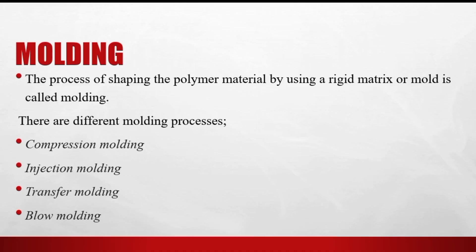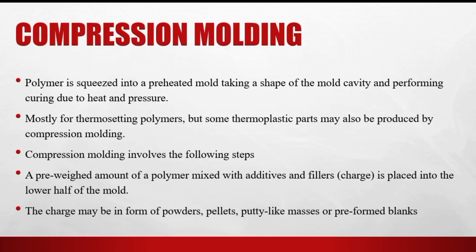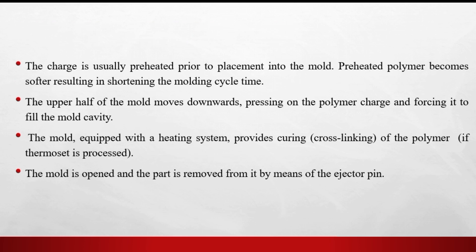Molding is a process of shaping polymer material using a rigid matrix or mold. Its different types include compression molding, injection molding, transfer molding, and blow molding. In compression molding, we put our preheated raw material into a mold cavity and apply heat and pressure. First, we place raw material such as pellets, powder, or blank material in the lower fixed half of the mold.